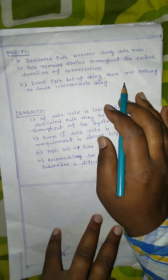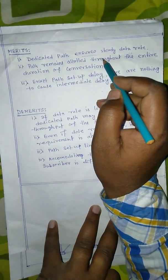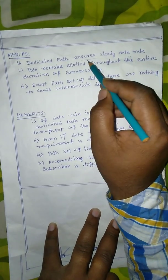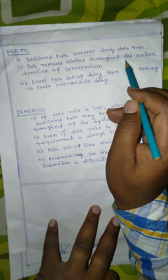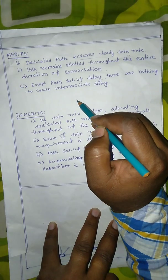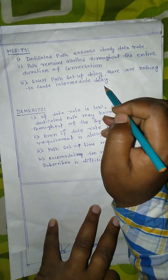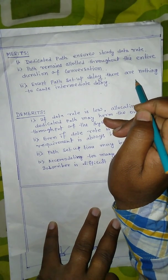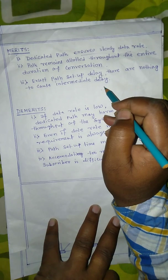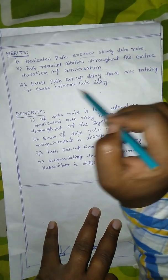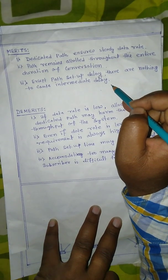Now let's discuss the merits and demerits of circuit switch network. First, we have a dedicated path between source and destination, which ensures a steady state data rate. Secondly, the path remains dedicated throughout the entire duration of communication. Thirdly, except for the path setup delay, there is essentially no other delay, because intermediate nodes introduce no delay at all — making it very fast communication.